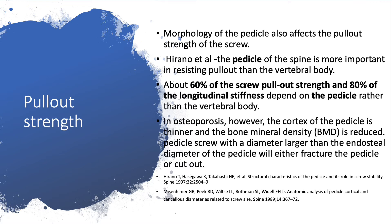About 60% of screw pull-out strength and 80% of longitudinal stiffness depend on the pedicle rather than the vertebral body itself. In osteoporosis, the cortex of the pedicle is thinner and bone mineral density is reduced. A pedicle screw with a diameter larger than the endosteal diameter of the pedicle will either fracture the pedicle or cut out either medially or laterally.